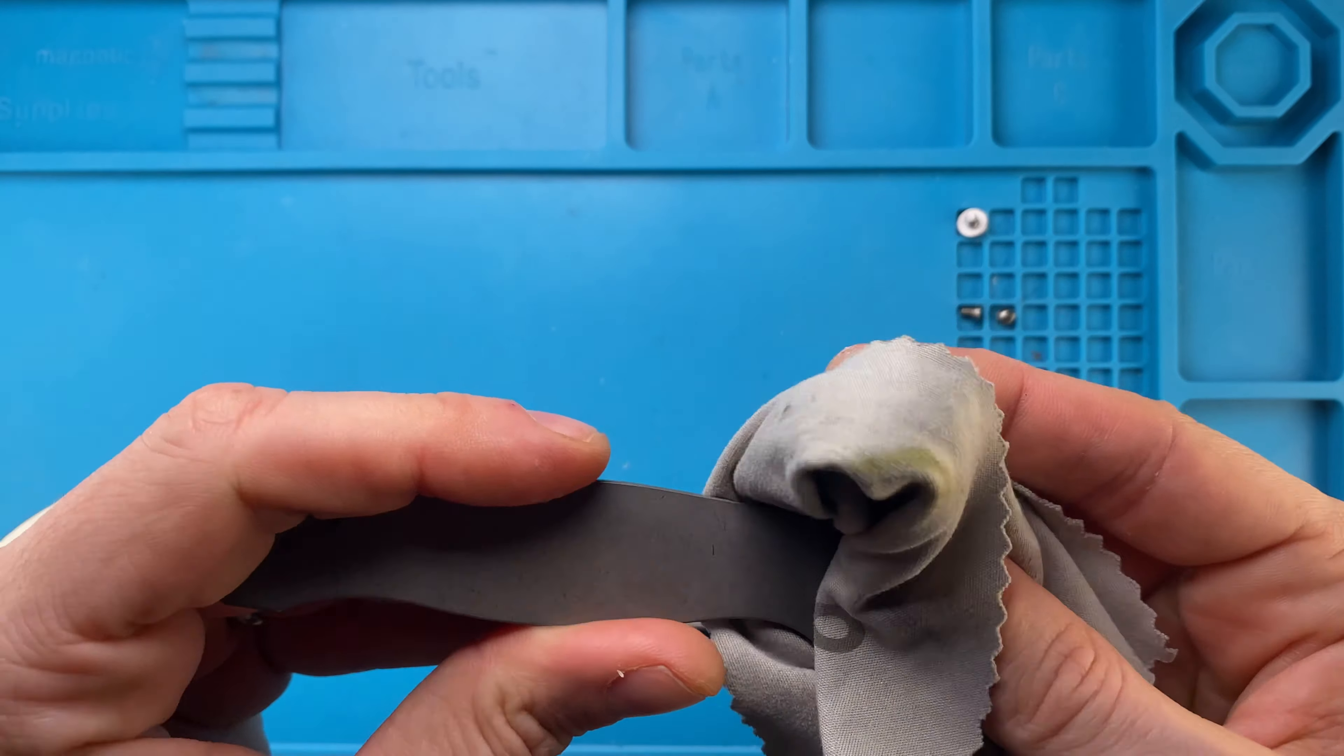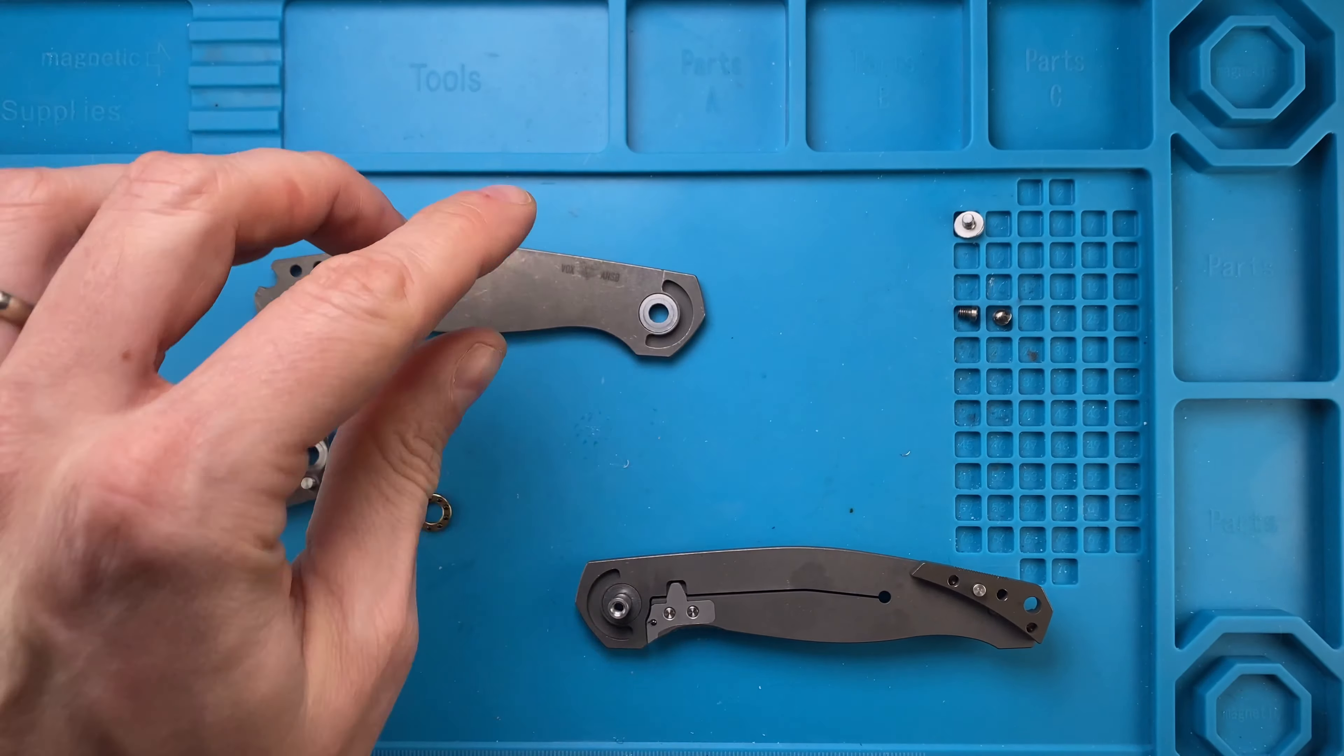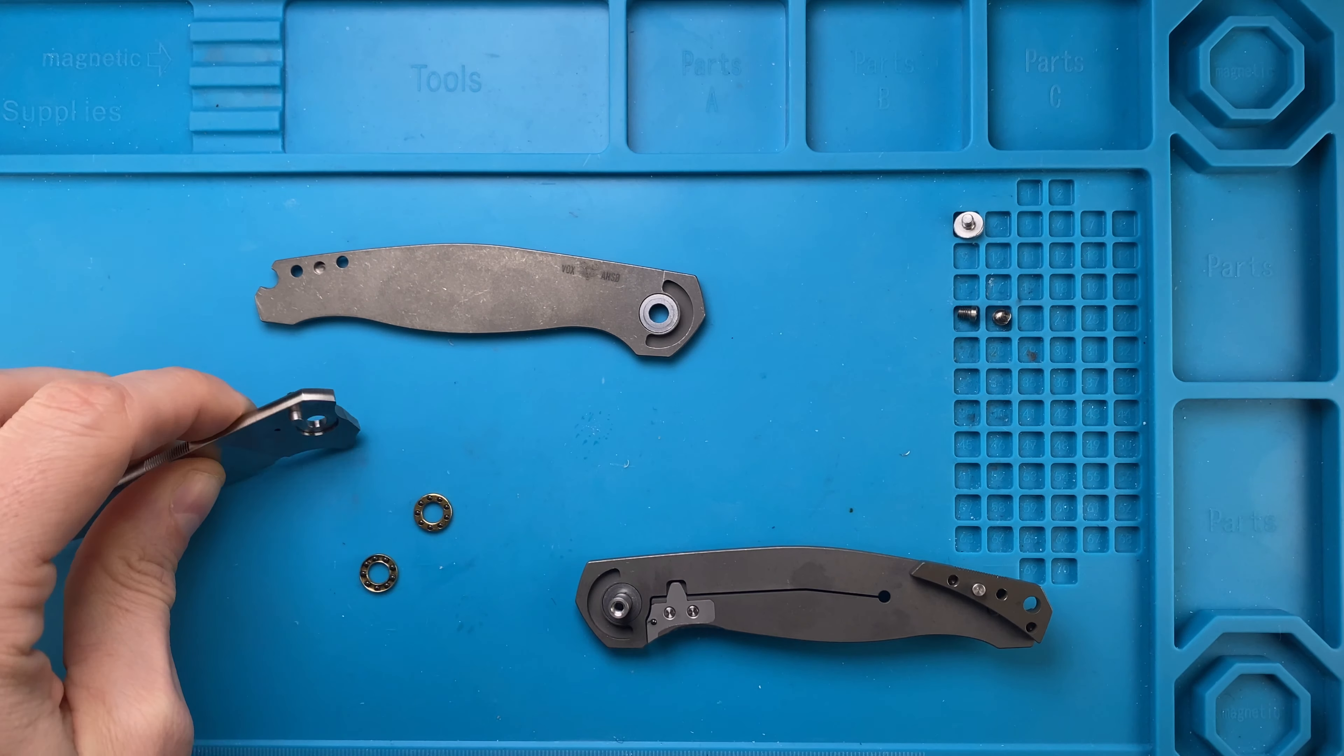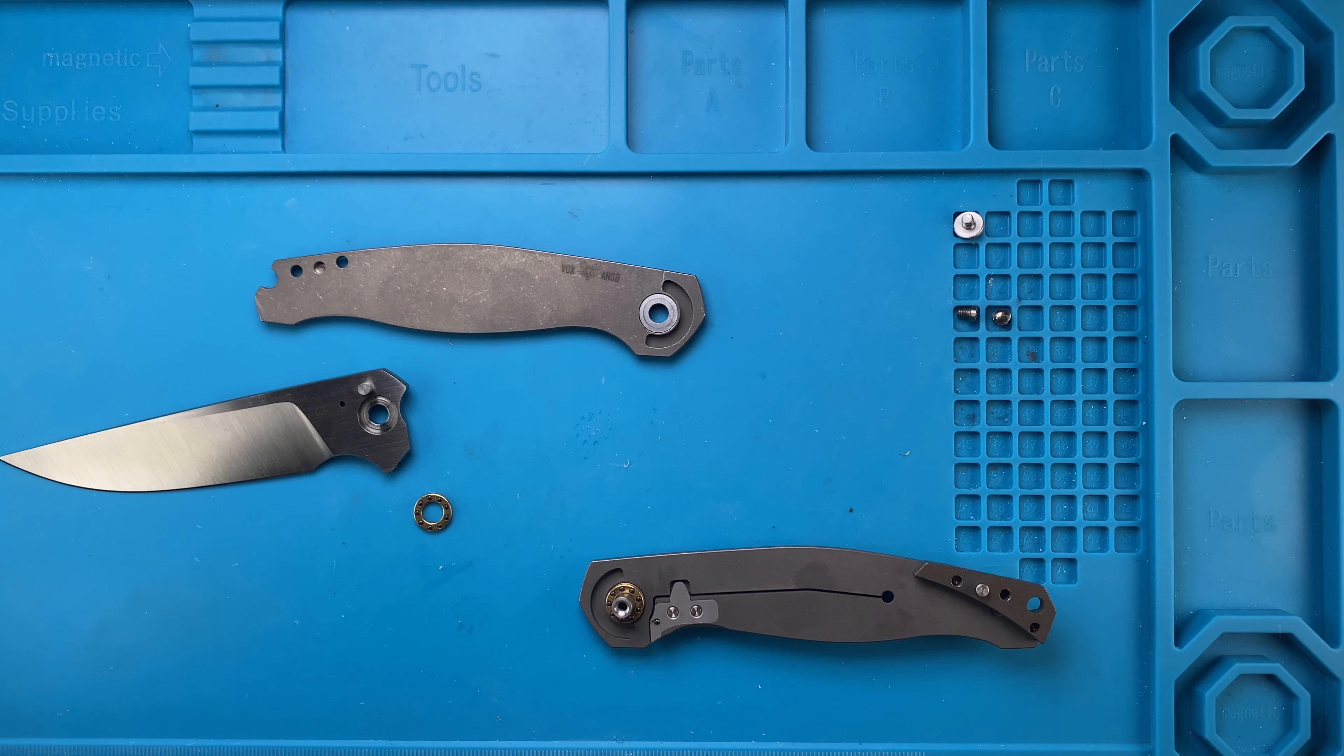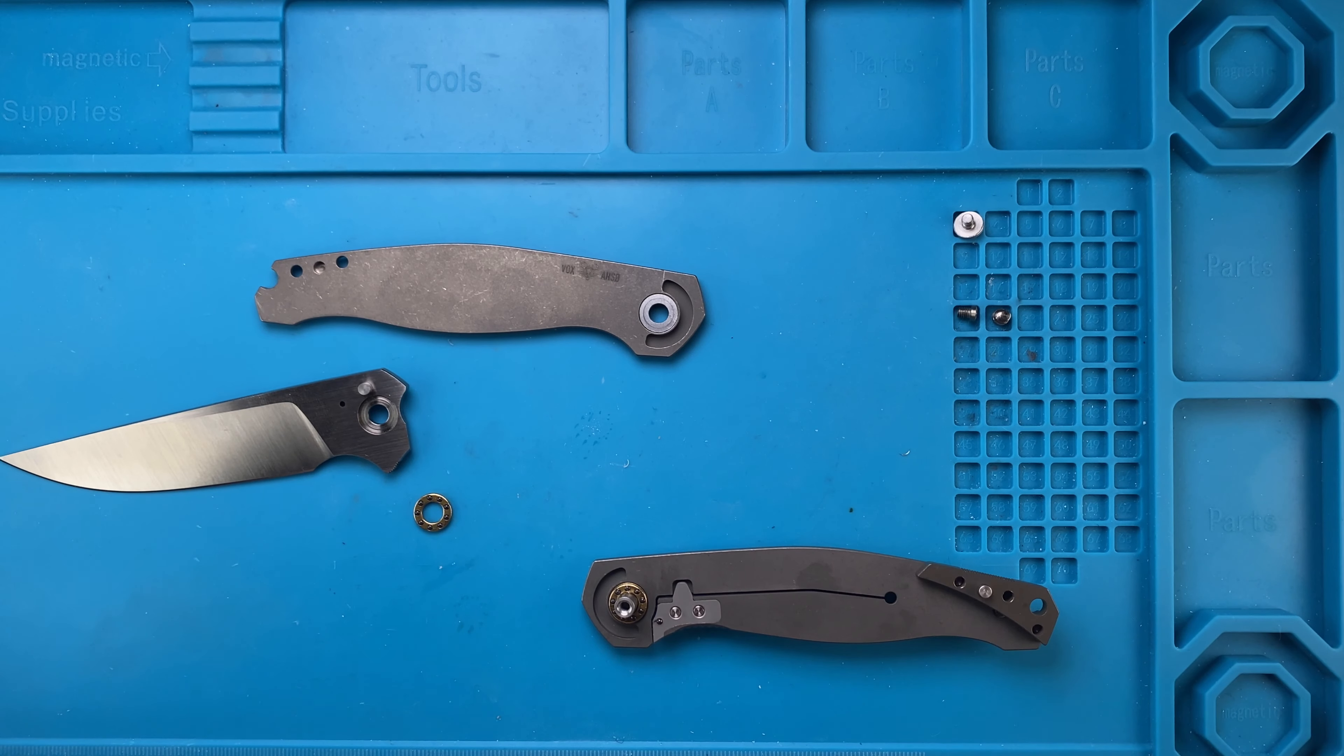We just want to try to improve the action. Vox Anso engraving on the inside. Hardened stainless steel washers, which is nowadays very common to see in this sort of price range, because this is gonna be like $250 or something like that. I mean, it's not a cheap one, but it's not the most expensive knife ever.